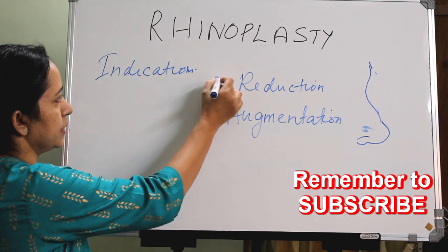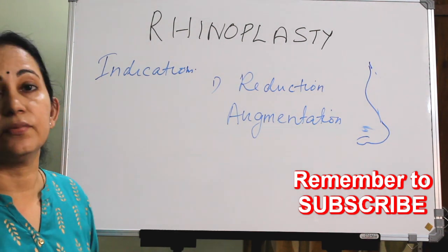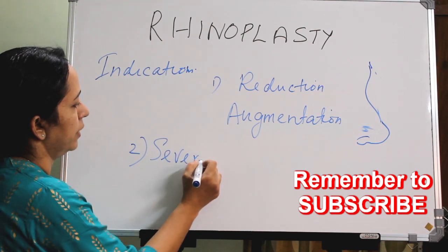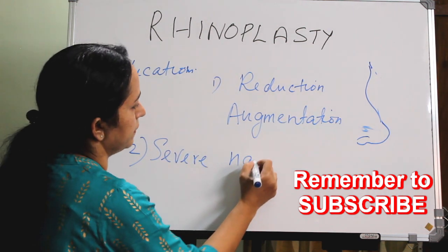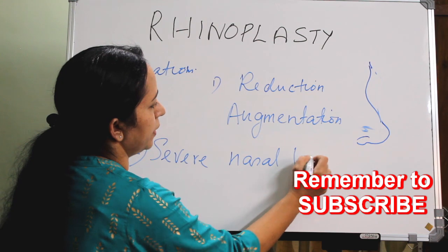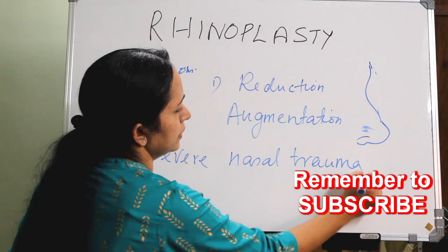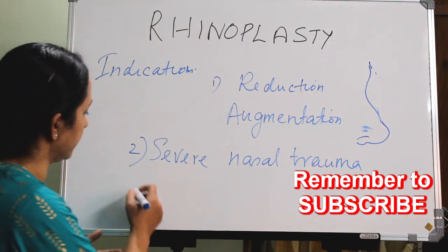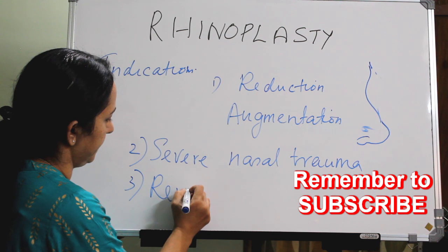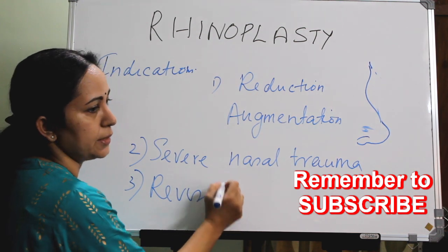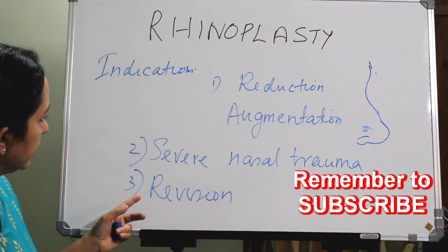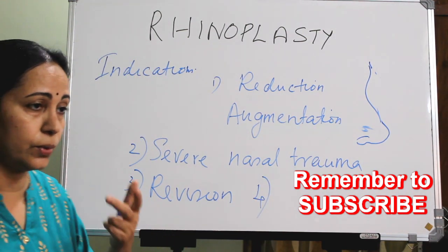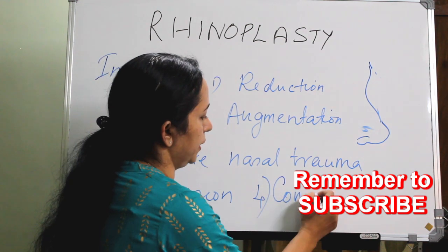The second indication is severe nasal trauma, in which there is a deformity of the nose and also extensive revision procedures — that is revision rhinoplasty. Another indication is congenital anomalies of the face including the nose. These are the broad indications for rhinoplasty.